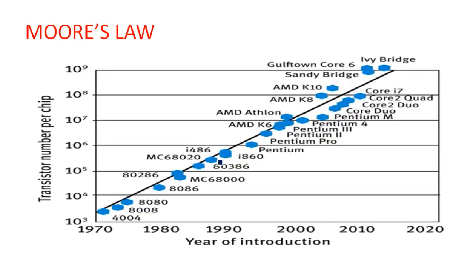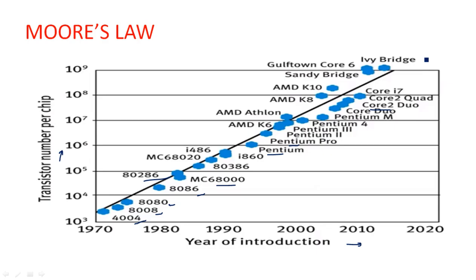According to Moore's Law we can draw a graph of year versus transistors fabricated on an integrated circuit. The evolution started from the 1970s through processors like the 4004, 8008, 8080, 8086, and x86 series, then microcontrollers, then Pentium, Core i3, i5, i7, i9, and AMD processors like quad-core and dual-core. All these were developed on the basis of Moore's Law.